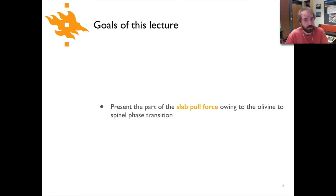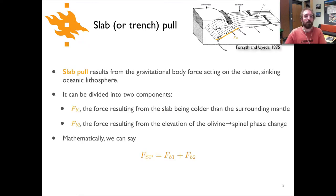In the previous lecture we talked about the slab pull force that results from the slab being colder than the mantle surrounding it, and here we're going to look at the component of the slab pull force that is the result of the olivine to spinel phase transition that takes place in the subducting slab.